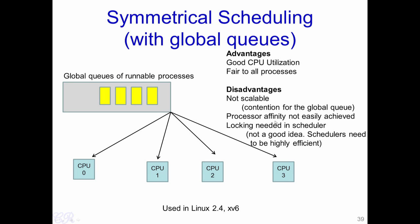Another disadvantage comes from the fact that processor affinity is not easily achieved. Processor affinity is an option given to users in the system to choose which processor they want their process to execute in. For instance, a user may decide that he wants his process to execute only in CPU 0 and no other CPUs. In this particular scheme, it is more difficult to implement processor affinity. This particular scheme is used in Linux 2.4 kernels as well as the XV6 operating system.